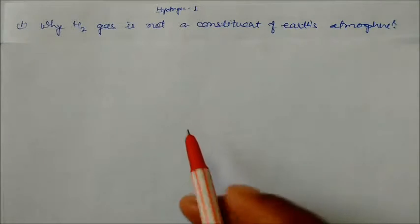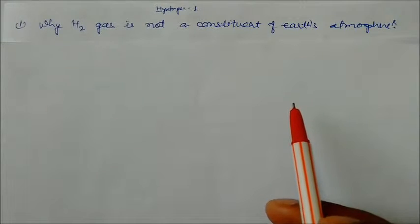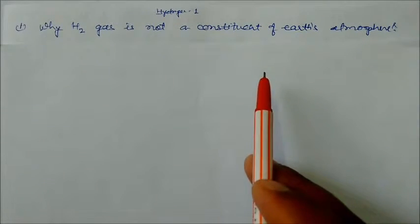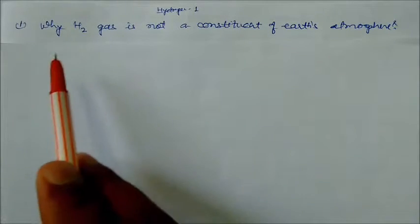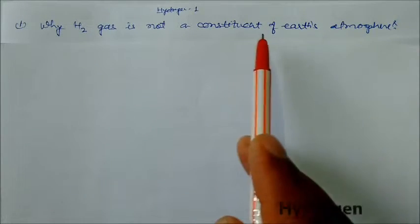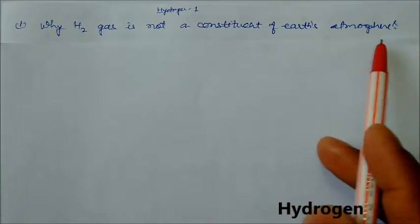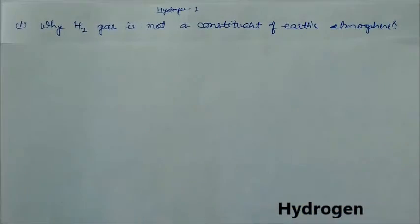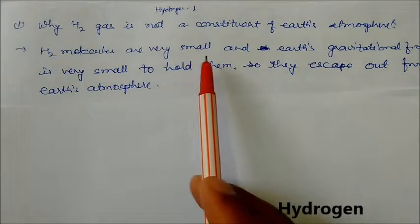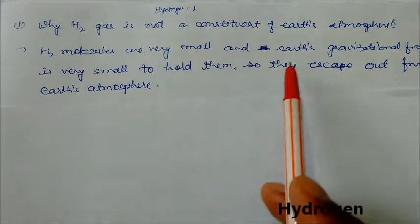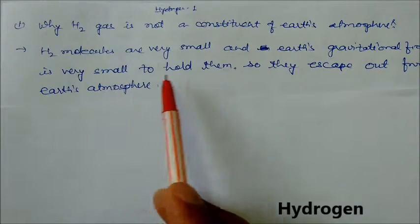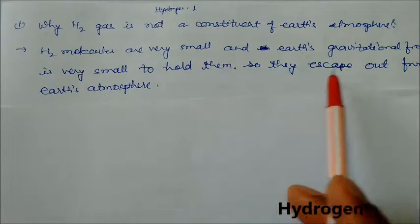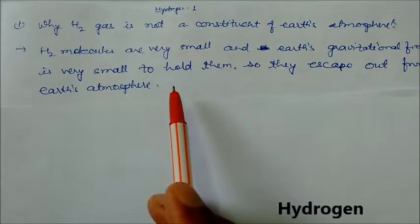Welcome to this session where we will study reasoning questions regarding the chapter on hydrogen. Why is hydrogen gas not a constituent of Earth's atmosphere? The reason is hydrogen is a light gas with very small and light molecules, so light that the Earth's gravitational field is too small to hold them. These gases escape out from the Earth's atmosphere.